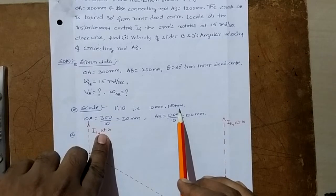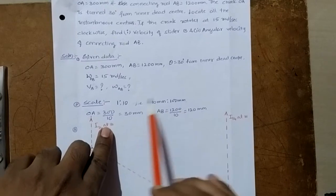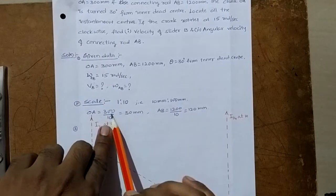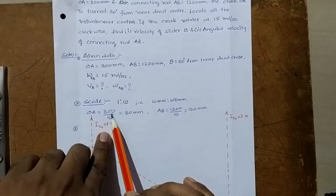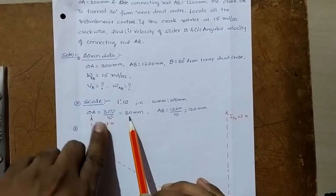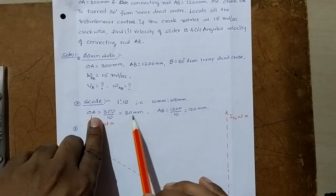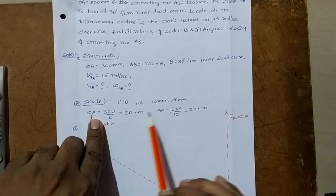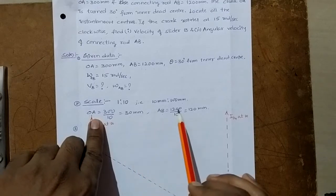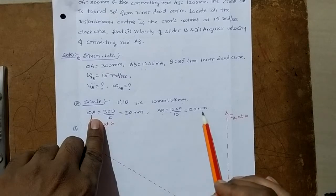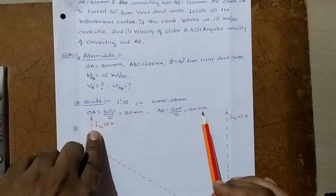By using the scale: OA is equal to 300, so according to scale, OA is equal to 30 mm. Then AB is equal to 1200, which according to scale is 120 mm.